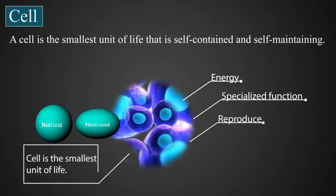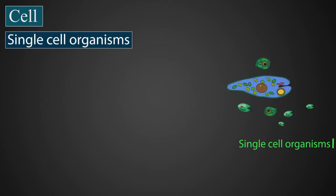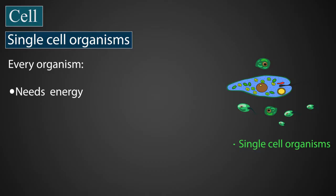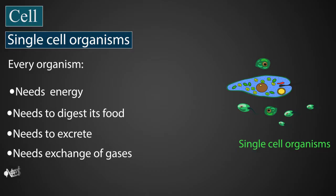Some organisms are made up of a single cell, and every organism needs some sort of energy. It needs to digest its food, it needs to excrete, it needs to exchange gases, and it needs movement. So all these activities are performed by a single cell. We will learn about unicellular organisms in our next section.